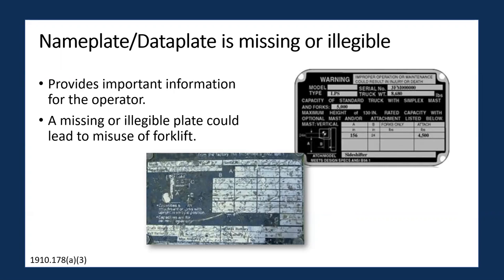So the nameplate — also called the data plate, which I'll be referring to as in this webinar — provides important information for the forklift operator, such as the fuel type, the forklift weight, the limitations and capabilities of the forklift itself, as well as the attachments that are going to be used with it. This information is important for operators as they can reference the limitations and capabilities of the forklift they are operating.